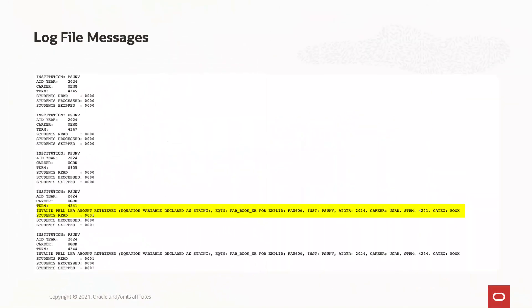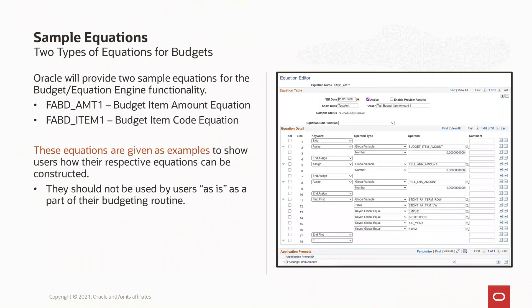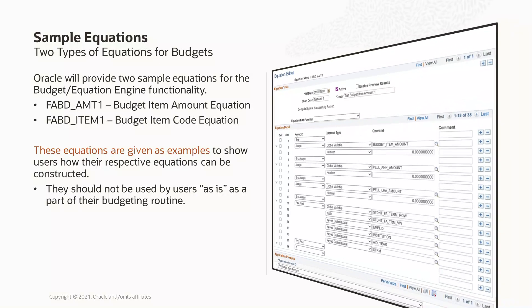We have updated the output of the log files to display warnings if the assignment of an item code failed. We delivered sample equations — one budget item amount equation and one budget item code equation. Because budget processing is dependent upon your institution's setup, these sample equations will not work as delivered for your budgeting needs. However, they are there to give you an example of how to develop your own equations for your needs.